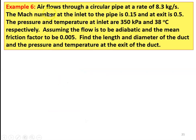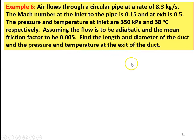Example number 6. Air flows through a circular pipe at a rate of 8.3 kilograms per second. The Mach number at the inlet to the pipe is 0.15 and the exit is 0.5. The pressure and temperature at the inlet are 350 kPa and 38 degree Celsius respectively. Assume the flow to be adiabatic and the mean friction factor to be 0.005. Find the length and diameter of the duct, the pressure and temperature at the exit of the duct.